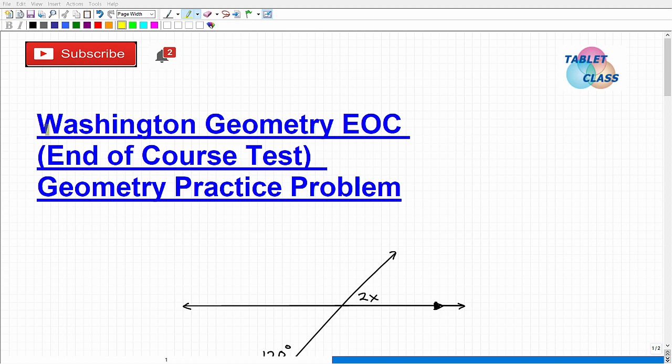Let's talk about the Washington Geometry EOC — that stands for End of Course Test. If you're watching this video, I assume you're a high school student in Washington preparing for the Geometry EOC. That's very good because you're obviously taking the test seriously, as you should, because all these EOC tests and course tests have a real impact on your high school record.